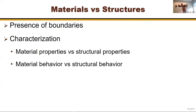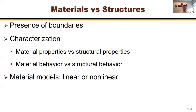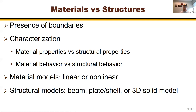Material properties include Young's modulus, Poisson's ratio, CTE, and density. Structure properties include bending stiffness, extension stiffness, torsional stiffness. Material behavior covers hardening, softening, linear elastic, hyperelastic, viscoplastic responses. Structure behavior covers buckling, vibration, and deflection. Models are also different: material models can be linear or nonlinear; structural models include beam, plate/shell, or 3D solid models.